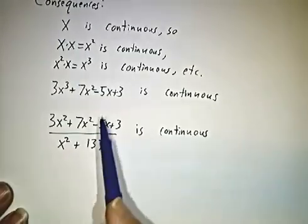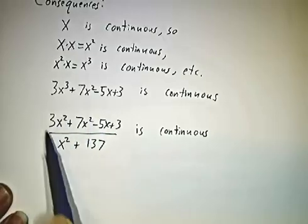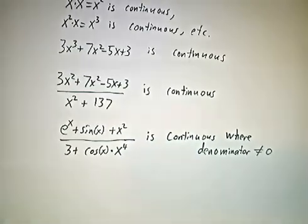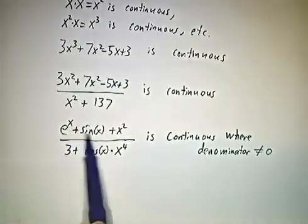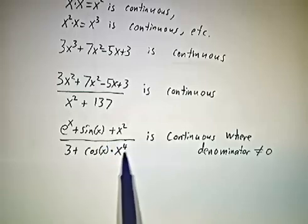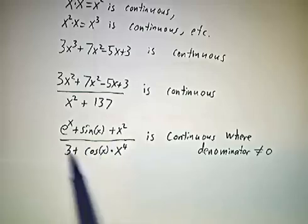And we can take ratios of continuous things, and that's continuous. Here this is continuous everywhere because the denominator is never zero. And we could even get more complicated stuff, like (e^x + sin(x) + x²) / (3 + cos(x) * x⁴). That's going to be continuous everywhere except where the denominator is zero.